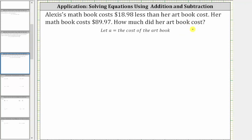We are given Alexis's math book cost $18.98 less than her art book cost. Her math book costs $89.97. How much did her art book cost?